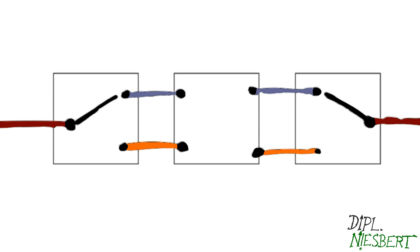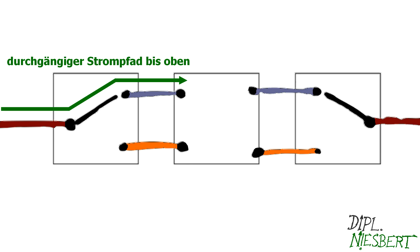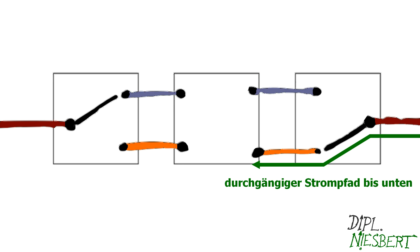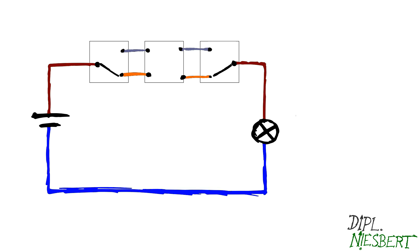Von rechts und von links gibt es immer genau einen Weg zum Kreuzschalter. Die Leitung ist entweder bis oben oder bis unten hin durchgängig, jeweils auf der linken und auf der rechten Seite. Es liegt dann also nur noch an dem Kreuzschalter, ob er die durchgängigen Wege auch verbindet oder ob er sie ins Leere laufen lässt.